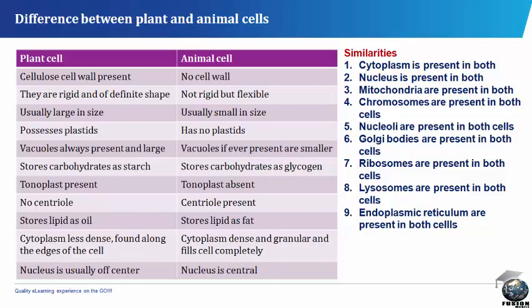Not minding the differences between plant and animal cells, they have similarities. Cytoplasm is present in both cells. Nucleus is present in both cells. Mitochondria are present in both cells. Chromosomes are present in both cells. Nucleoli are present in both cells. Golgi bodies are present in both cells. Ribosomes are present in both cells. Lysosomes are present in both cells. Endoplasmic reticulum is present in both cells.